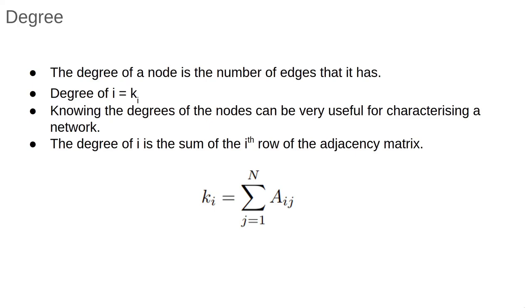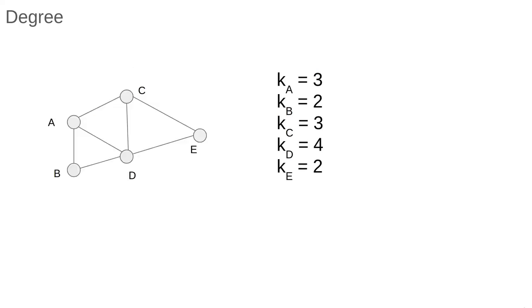A sometimes useful formula is that the degree of the node i is the sum of the elements of the ith row of the adjacency matrix. Again, pause here and make sure you understand why this works. Here's our example network from before, together with the degrees of each of its nodes. Pause the video and make sure you understand where each of the numbers come from. We simply count the number of edges coming out of each node.